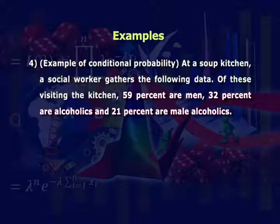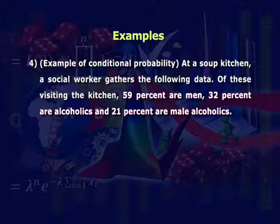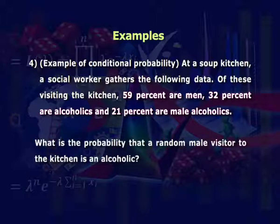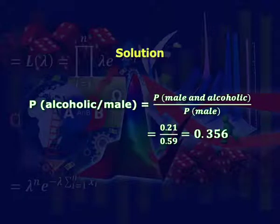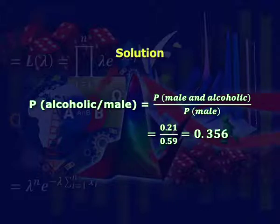Example 4 is on conditional probability. At a soup kitchen, a social worker gathers the following data: 59% of visitors are men, 32% are alcoholics, and 21% are male alcoholics. What is the probability that a random male visitor is an alcoholic? P(alcoholic | male) = P(male and alcoholic) / P(male) = 0.21 / 0.59 = 0.356.